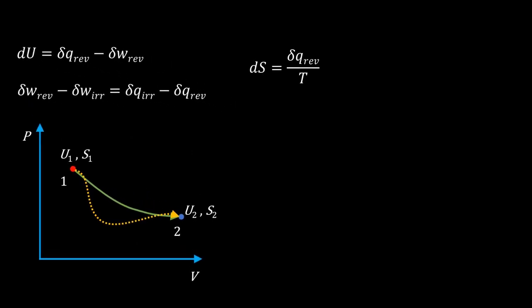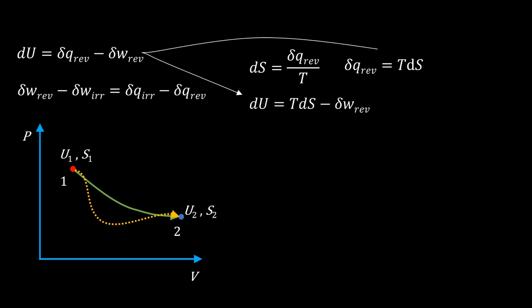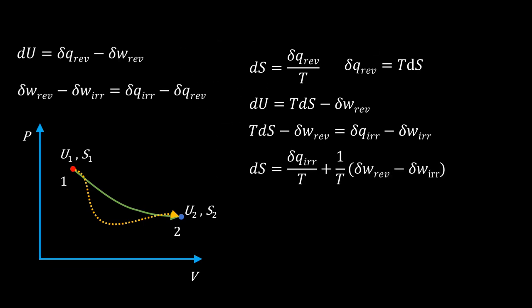Now consider ds. We know ds equals δq/T in the reversible case, so δq reversible equals T·ds. Substituting into the first law: du equals T·ds minus δw reversible. Since du is the same in both processes, equate it to δq irreversible minus δw irreversible and rearrange to get ds. It equals δq irreversible divided by T, plus (1/T) times (δw reversible minus δw irreversible). So in the irreversible process, the entropy change is not equal to just the q/T term — it includes an additional term.